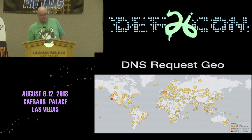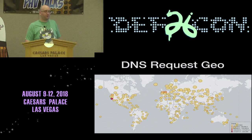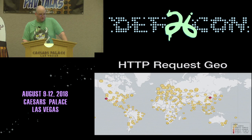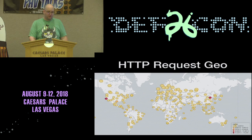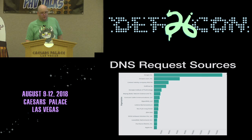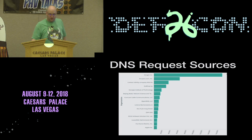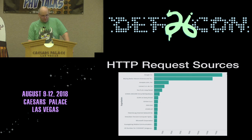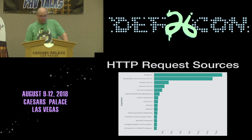These requests were definitely geographically scattered, although you can see a very hot spot on the West Coast — that's essentially from Google's infrastructure, as everybody loves using the quad eights. HTTP request geo is basically the same, but you can see a larger hot spot in China and certainly a lot of Chinese traffic in general. For DNS sources, Google is by far the number one source, mostly large infrastructure. For HTTP, the Beijing Baidu network moves way up in the ranks.